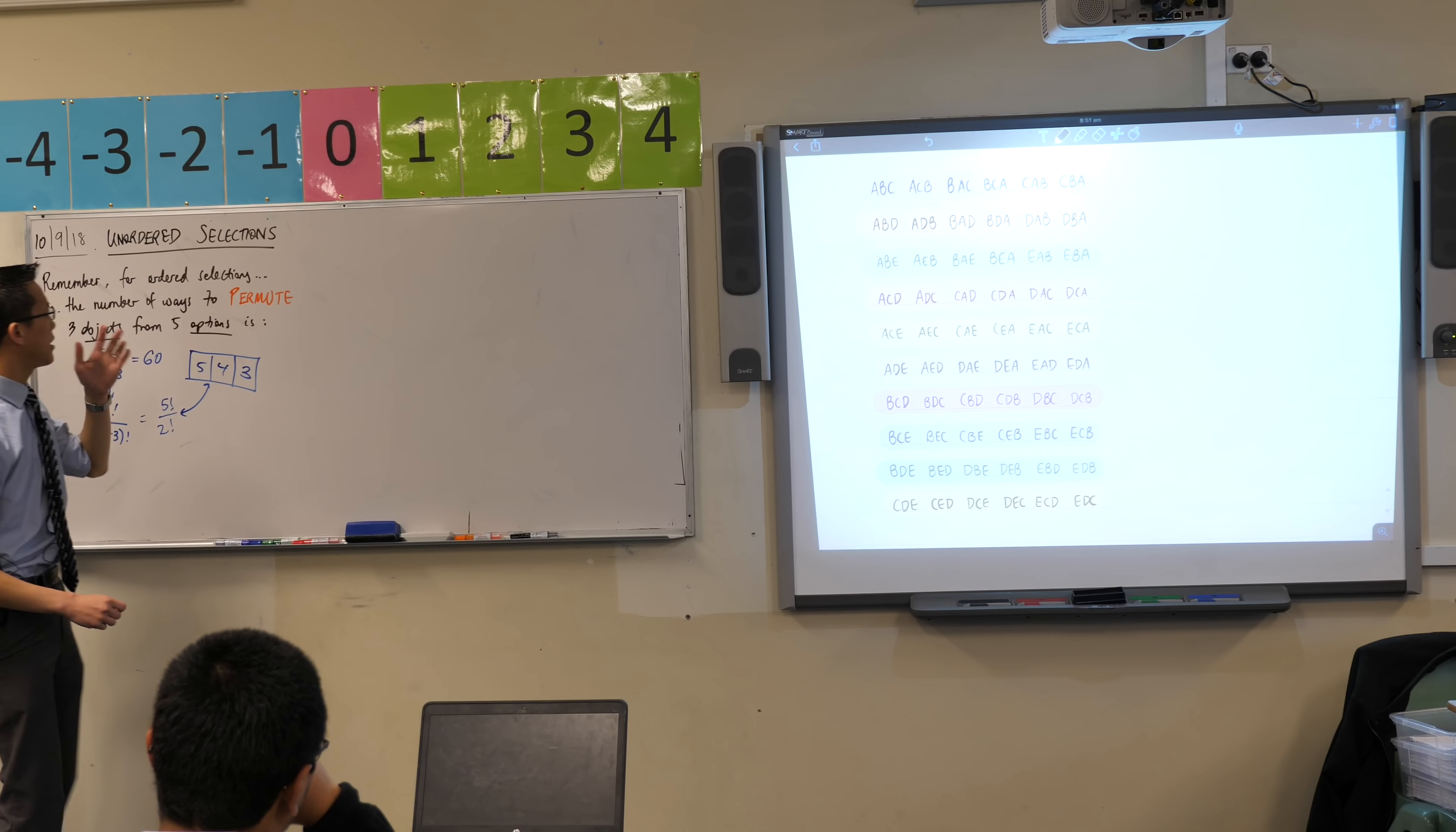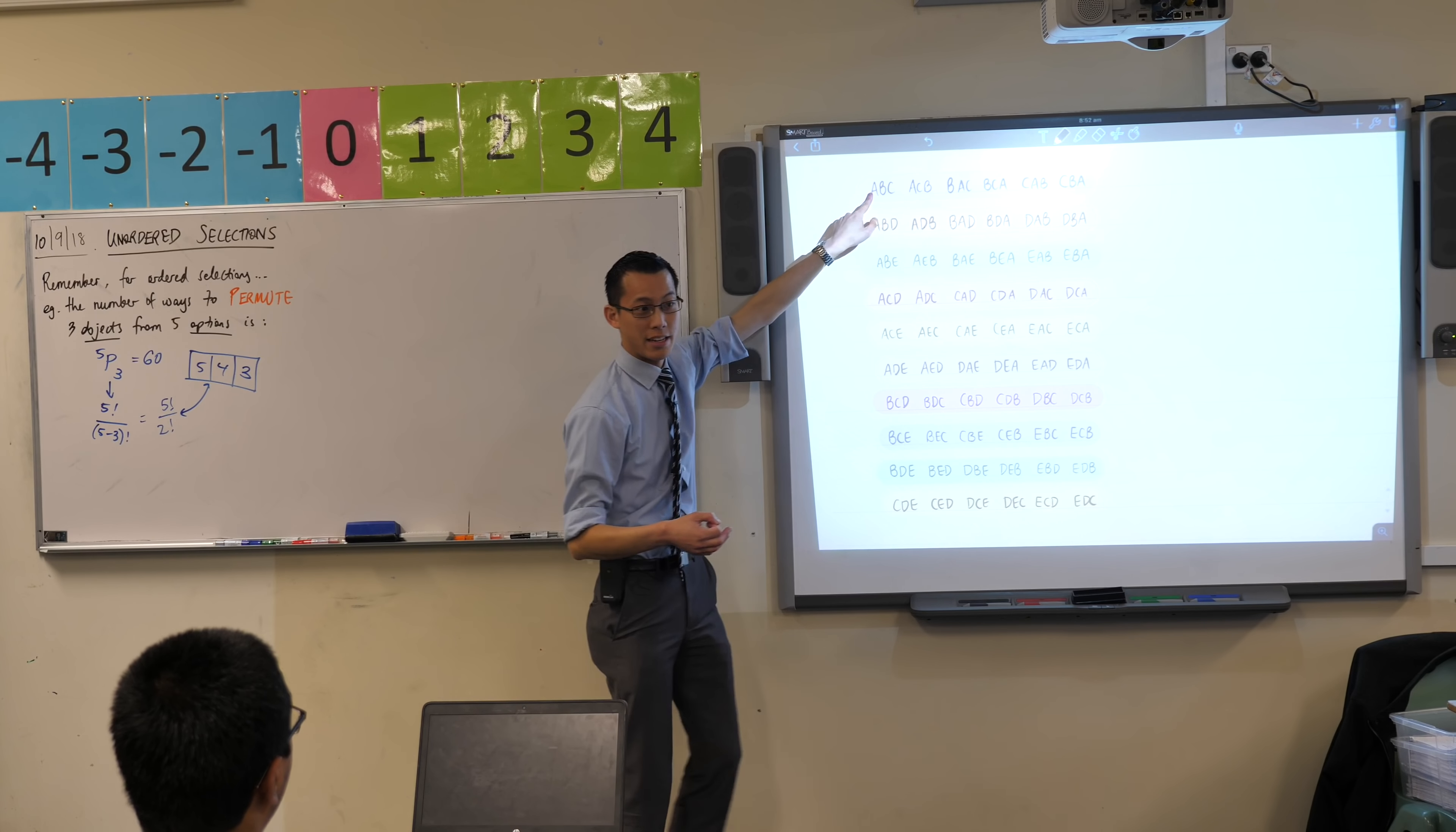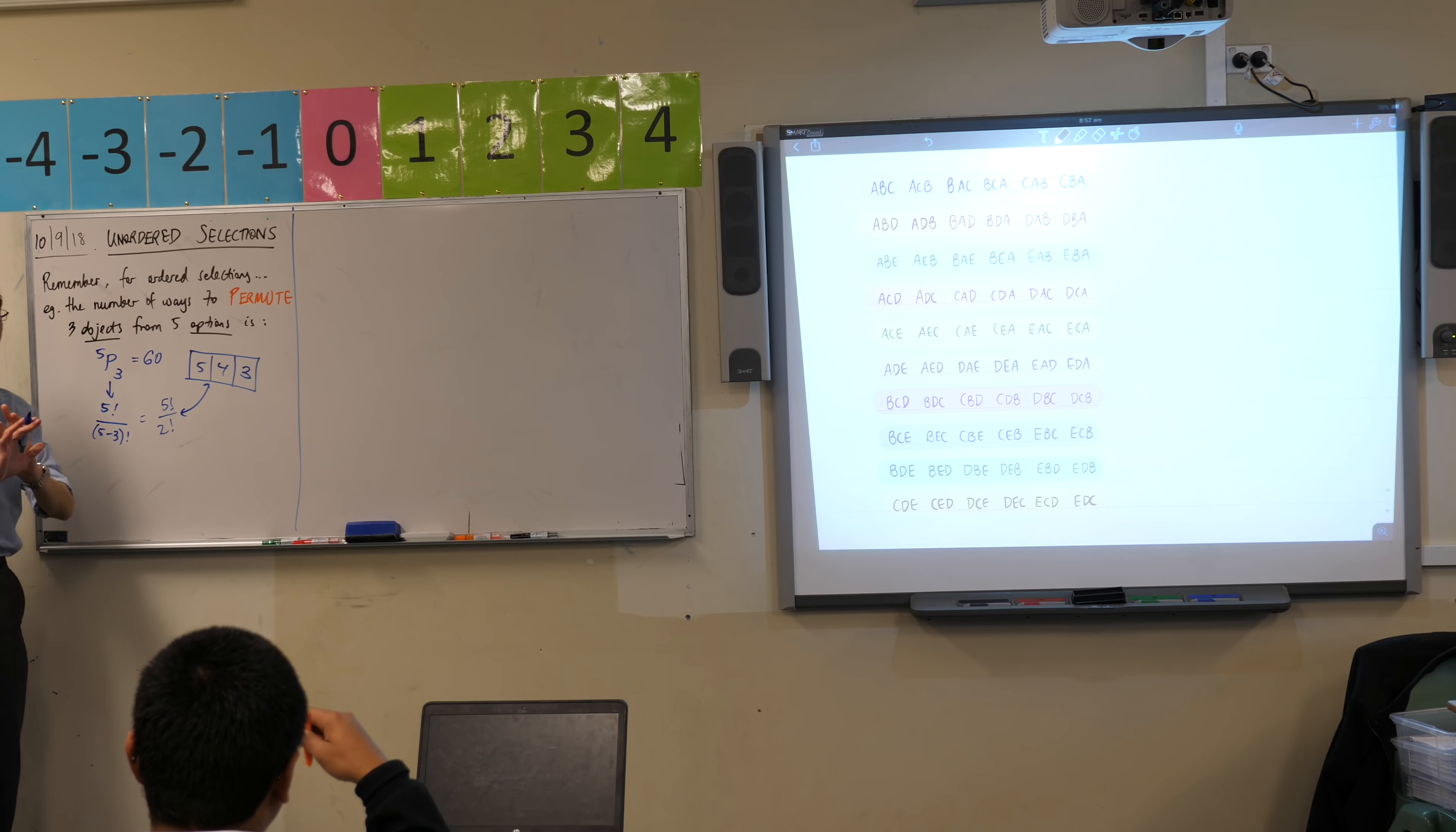So if I wanted to say, how do I go from this question where order matters to a question of what if order doesn't matter? See all these six options, these six up the top? They're all the same choice, aren't they? They are all the same three letters, right? So this is all identical, all of these, all identical. It's the same three letters over and over again. So now if I rephrase the question, I'd like you to rephrase it with me.